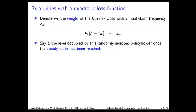Let the random variable L be the level occupied by the randomly selected policyholder once the steady state of the bonus-malus scale has been reached. We want to derive the probability distribution of L, and here are the steps needed to find this distribution.